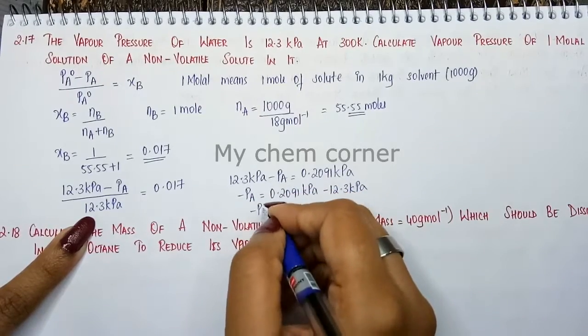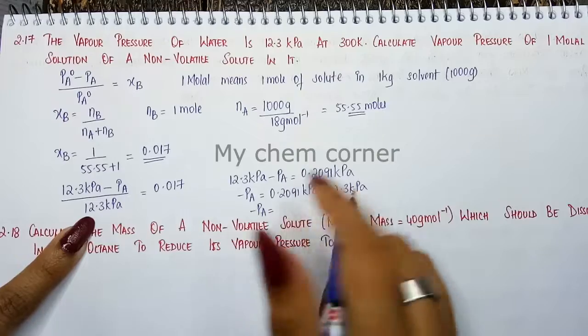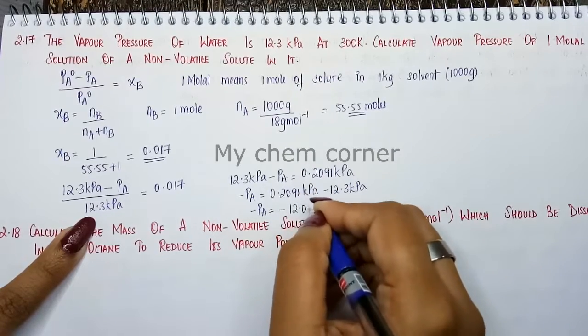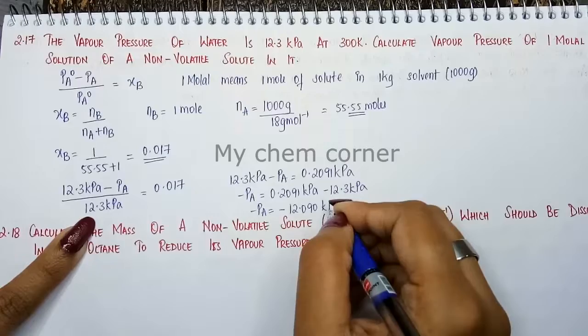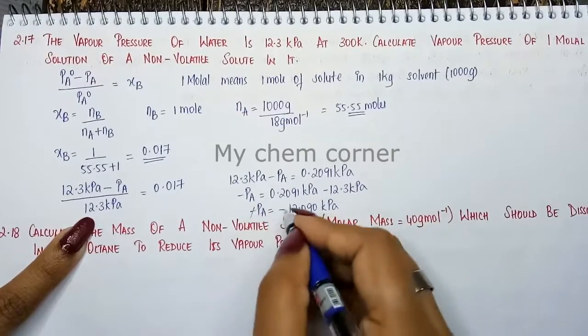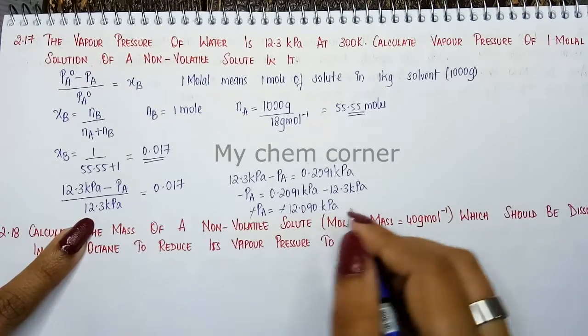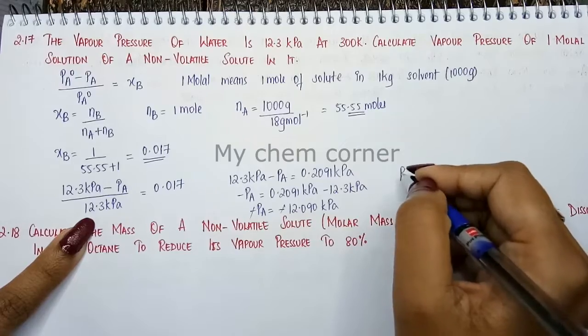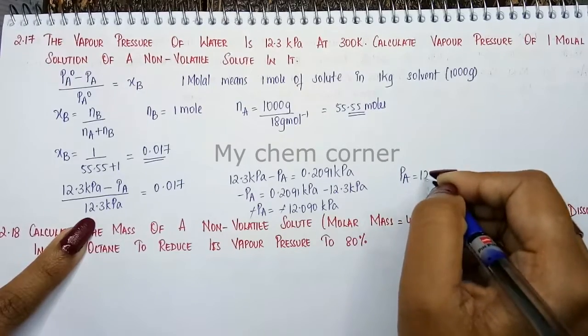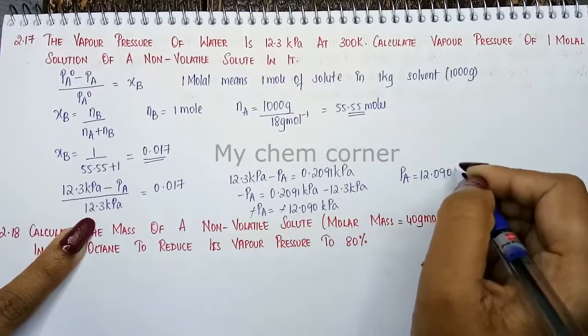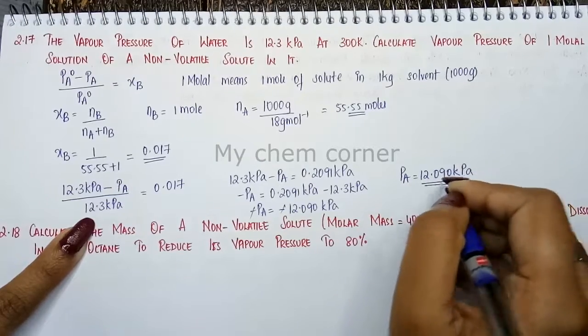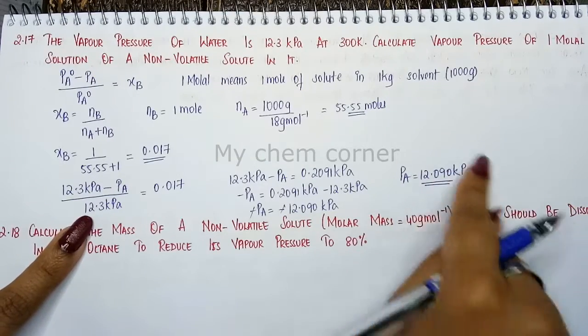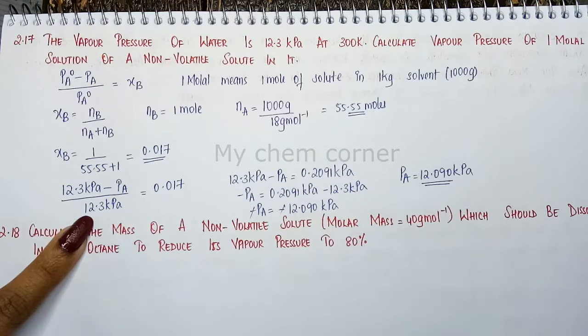Now, here, this will be minus P_A is equal to, when you minus both, you will get minus 12.090 kilopascal. Left side minus and right side minus both will get cancelled. And final answer is going to be P_A is equal to 12.090 kilopascal, which is the vapor pressure of one molal solution of the non-volatile solute.